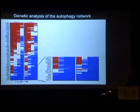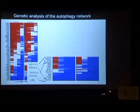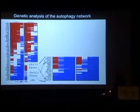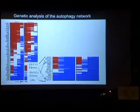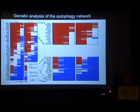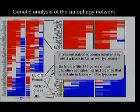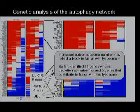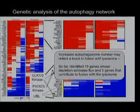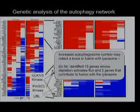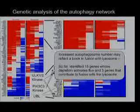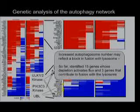A number of proteins also increase autophagy when depleted — genes that act like rapamycin, increasing the number of autophagosomes. We've tested several of these in flux assays, which measure how rapidly things are going through the autophagy system. About 15 genes we tested so far activate flux, and three genes appear to contribute to fusion with the lysosome — acting at different stages in the pathway.